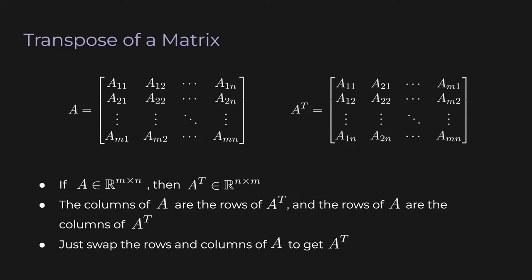So if A is a matrix in R^(m×n), then A transpose is a matrix in R^(n×m). You can also think of a transpose as rotating a matrix 180 degrees around the diagonal line that connects A₁₁, A₂₂, A₃₃, and so on.